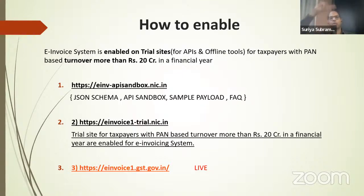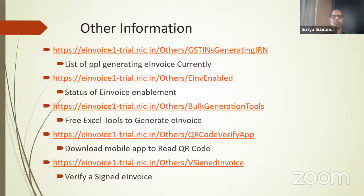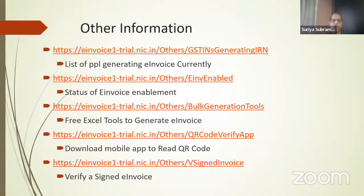One method to verify you're using the correct portal is to go to gst.gov.in and check whether your invoices are reflecting — invoices take about 72 hours to appear, but make sure they come into GSTR1. The other portals available include utilities to check who has already generated an e-invoice and whether you are enabled for generating e-invoices. It is every taxpayer's responsibility to comply with the law — even if the government has not enabled you but you are required by law, please file a ticket and make sure you are able to generate e-invoices.